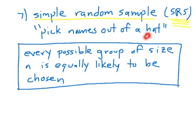Now, in practice you really don't use a hat. You do something different where you assign every single person a number and then randomly pick numbers — we'll talk about that in class. Simple random sample is super important because a lot of the math we're going to do later on relies on the fact that it's a simple random sample, and this is the best one we'll talk about because it's the least likely to be biased.